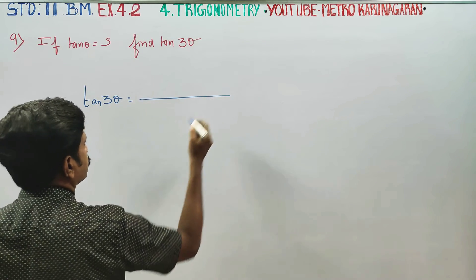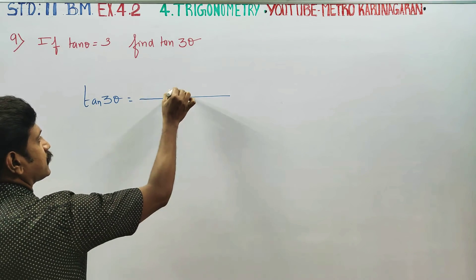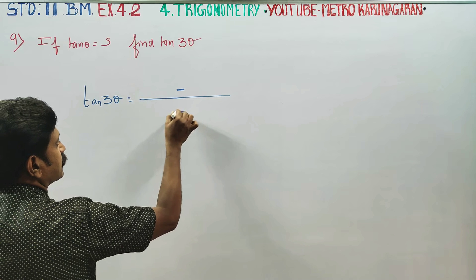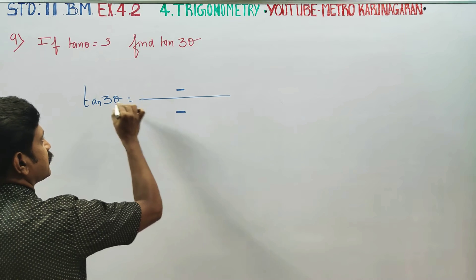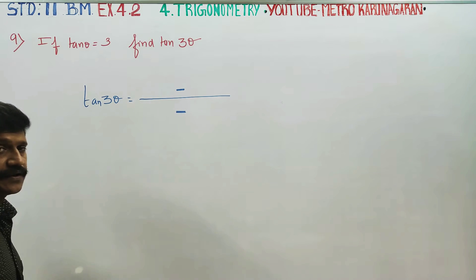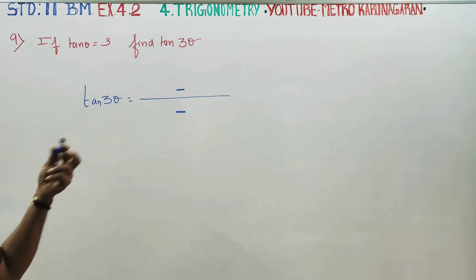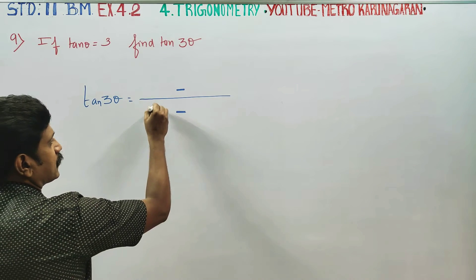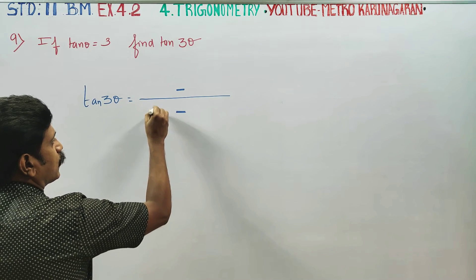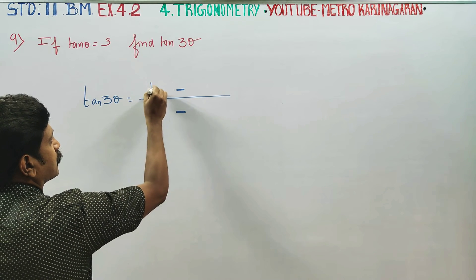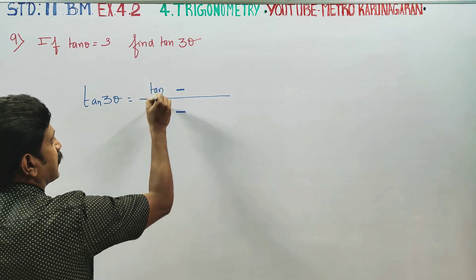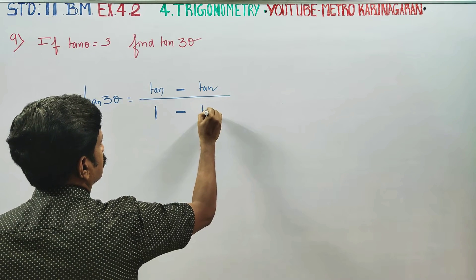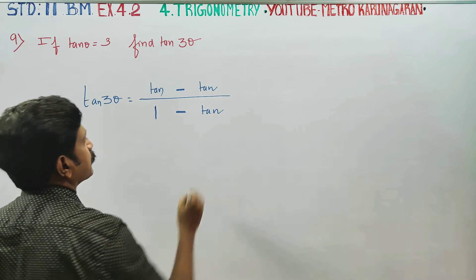For tan 3 theta, in the formula, the numerator has a top minus term and the bottom has a minus term. This is 3 theta. Here we go to 1 — this is 1 tan, this is 1 tan, this is 1 tan.